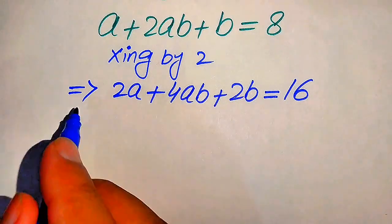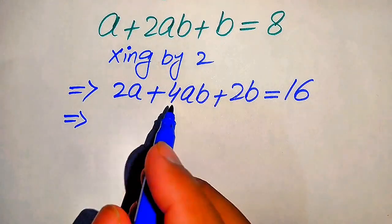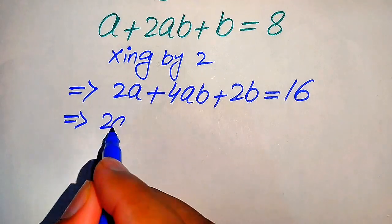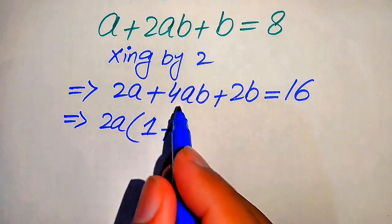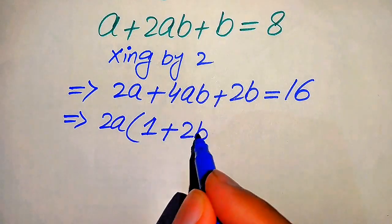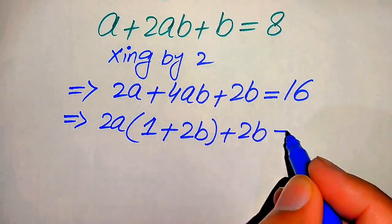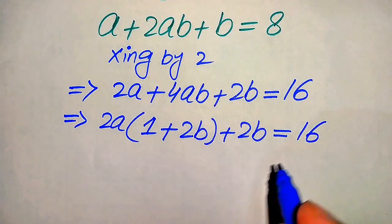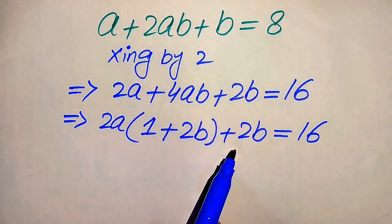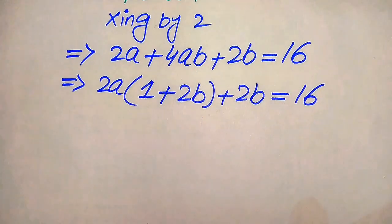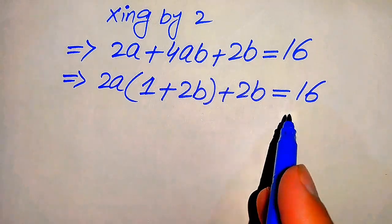In the next step, we take common 2a from the first two terms. When we take out 2a, the remaining values give us 2a times (1 plus 2b) plus 2b equals 16. We have (1 plus 2b) and only 2b remaining, so in order to make the factors we need to add 1 on both sides.